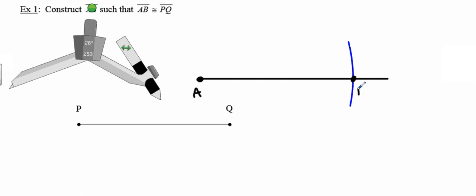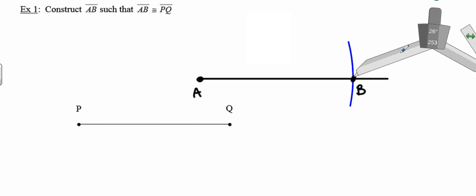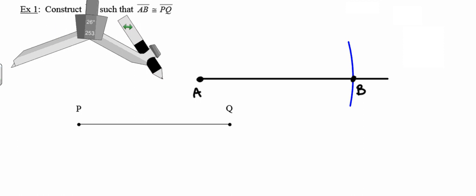Any point on that arc is at a distance of PQ units away from the given endpoint. The point where the arc intersects the line segment gives me point A and point B. I've created line segment AB with the same length as PQ, making them congruent. If I wanted a segment double the length of PQ, I'd keep the compass setting the same, move the point to B, and construct a second arc.